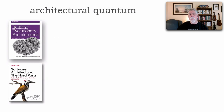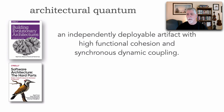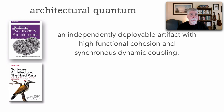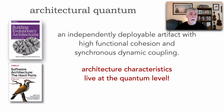It all starts with something called an architectural quantum. This term was coined originally in the book Building Evolutionary Architectures, written by Neil Ford, Rebecca Parsons, and Patrick Gua. Neil and I refined this definition in our Architecture the Hard Parts book. Basically, an architectural quantum is an independently deployable artifact with high functional cohesion and synchronous dynamic coupling. At a high level, this is about carving out the independent pieces of a system — the architectural characteristics like performance, scalability, elasticity, reliability, security, and maintainability all live at the quantum level.